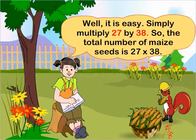Well, it is easy. Simply multiply 27 by 38. So, the total number of maize seeds is 27 into 38.